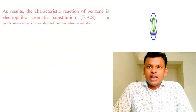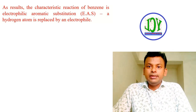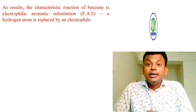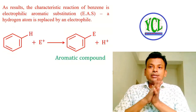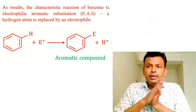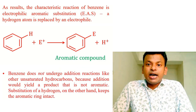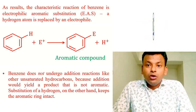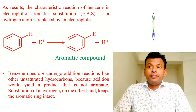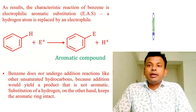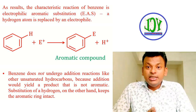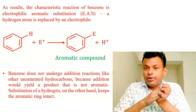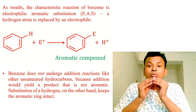As a result, the characteristic reaction of benzene is electrophilic aromatic substitution (EAS), where a hydrogen atom is replaced by an electrophile. Benzene does not undergo addition reactions like other unsaturated hydrocarbons, because addition would yield a product that is not aromatic. Substitution of a hydrogen, on the other hand, keeps the aromatic ring intact. When benzene performs an addition reaction, the product is not aromatic; when a substitution reaction is performed, the product retains aromaticity.